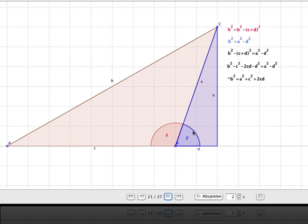If we take a look at the angle beta-dash here, the angle beta-dash equals 180° - beta. And the cosine of beta-dash is the adjacent leg over the hypotenuse, which is d over a.